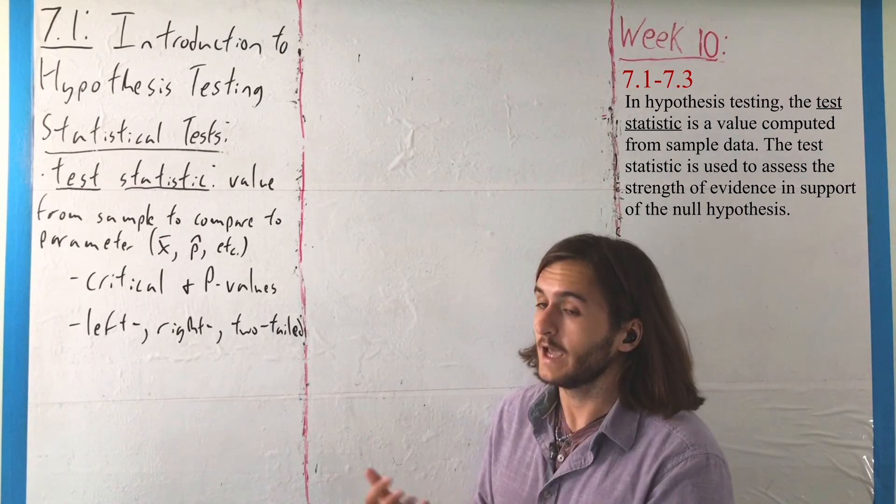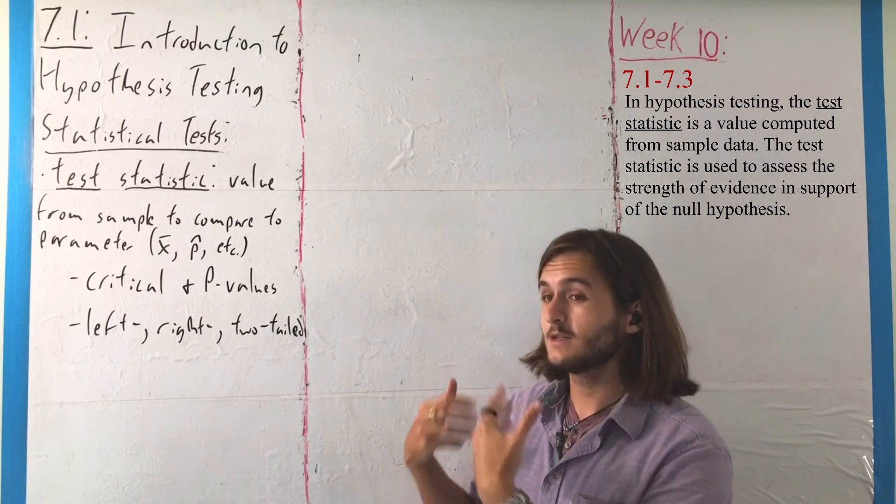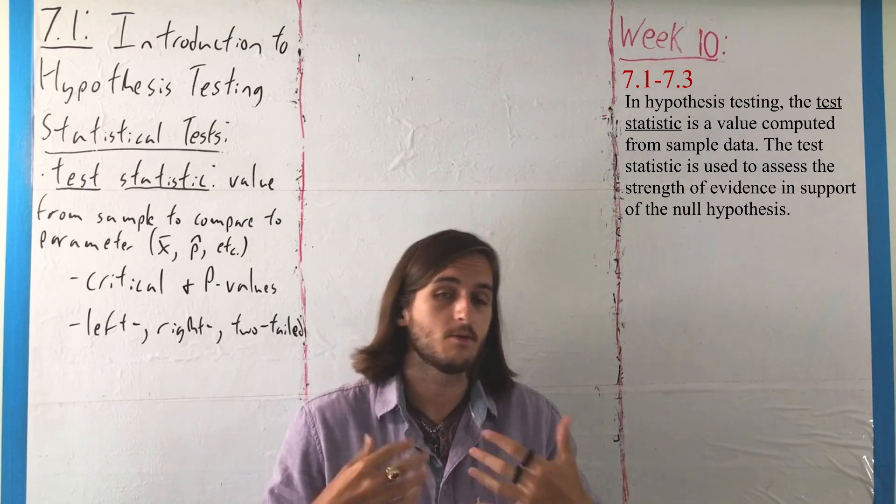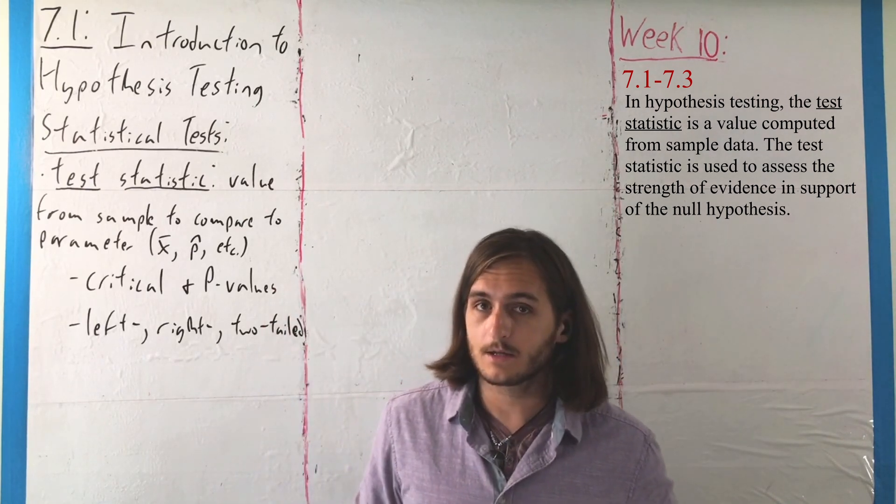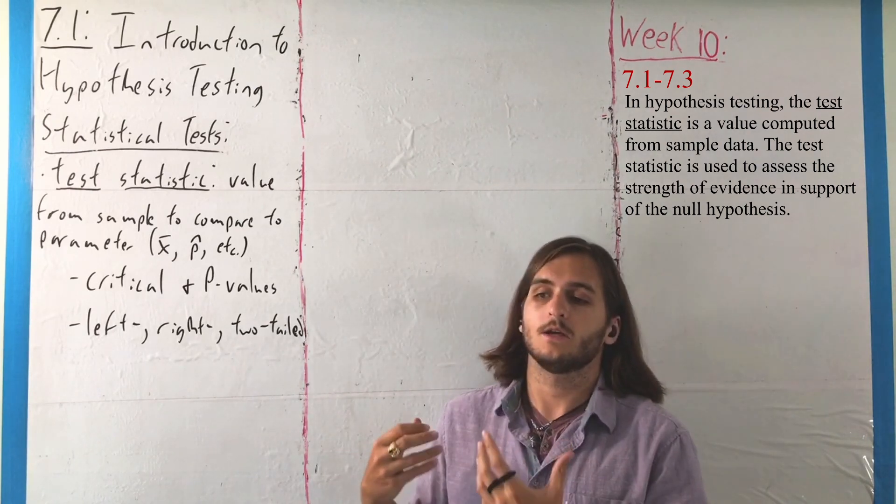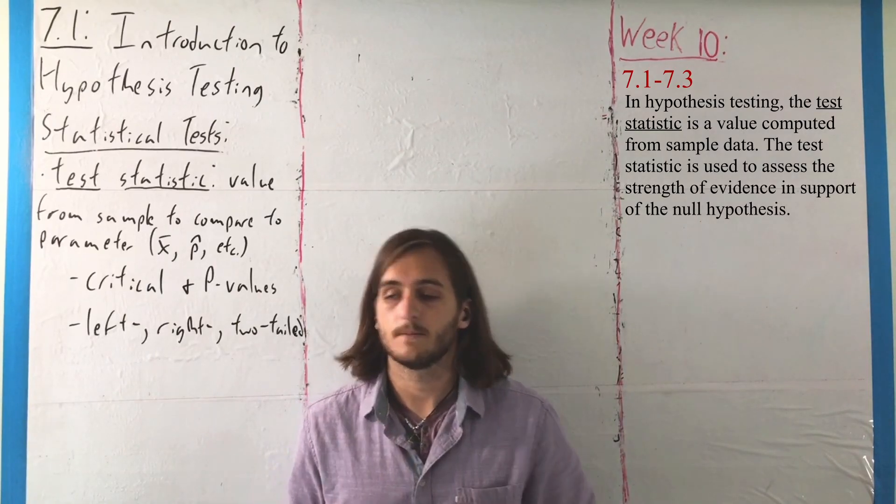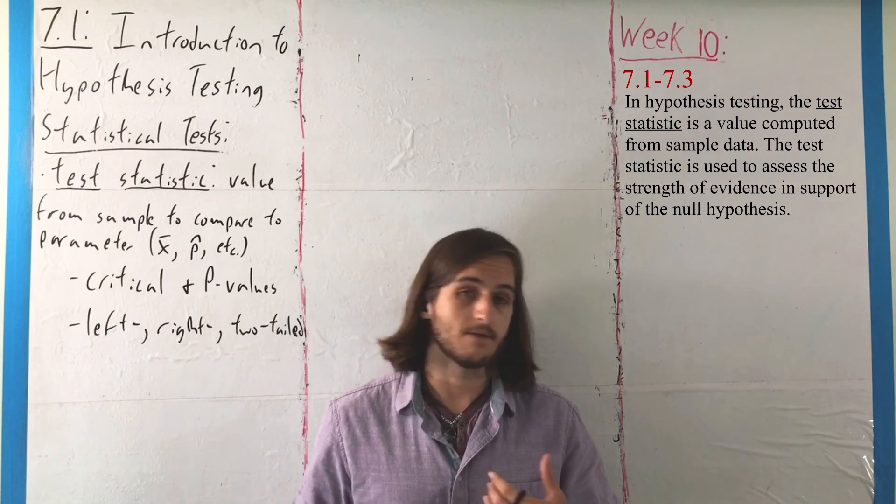Anyway, when we're running our test, as it were, we need the statistic that we can compare the parameter that is supposed to be working, that's supposed to be as we expect, to the reality of our sample. If we're looking at a parameter mean μ, then we will draw something like x-bar to compare it to. If we're looking at a proportion, as we'll see in 7.4, we'll have the value p that will compare to the value p-hat.